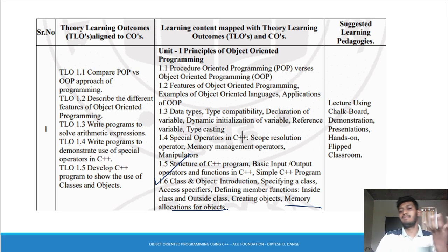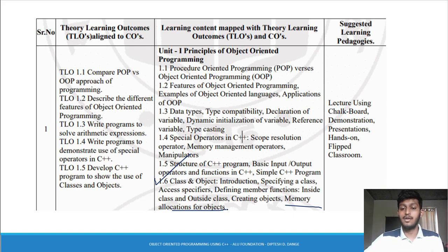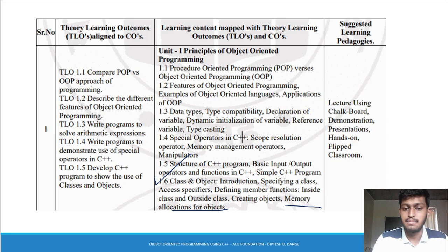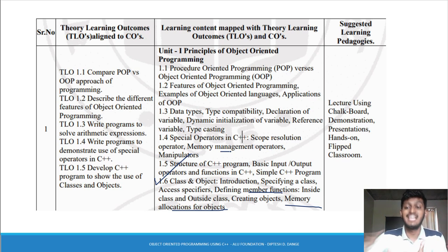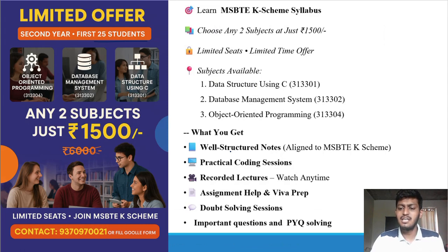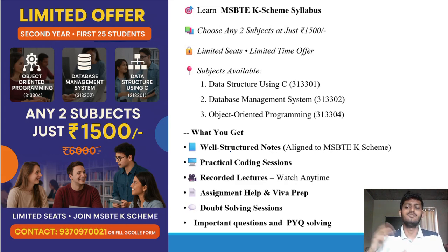We will see memory allocation for variables and how the object is allocated. There are two ways using special operators in C++. We have used the scope resolution operator to define the member function outside the class. Now we will see memory management operators when we allocate memory dynamically. We will see the first method of static allocation and dynamic allocation.